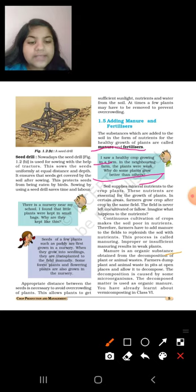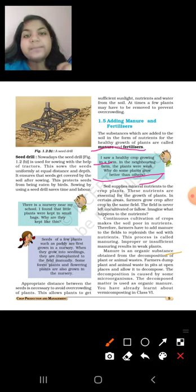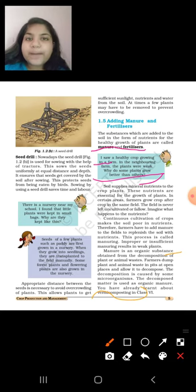The decomposition is caused by some microorganisms. The decomposed matter is used as organic manure. You have already learned about vermicomposting in Class 6. Manure is an organic substance which we get from dead plants and animals. When the dead plants and animals leaves into the soil, they decompose and it results in the manure. We have already discussed vermicomposting in Class 6. In vermicomposting, the decomposition is done by red worms and it helps to create the vermicompost.